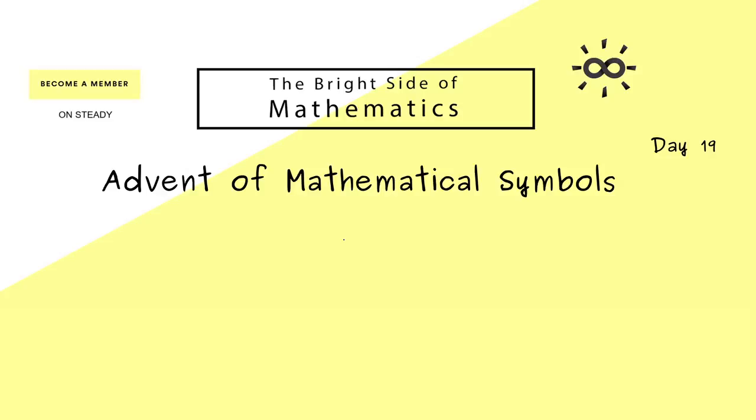Hello and welcome. The mathematical symbol of today is Euler's phi function, denoted with a lowercase phi. It's also called Euler's totient function and used in number theory.